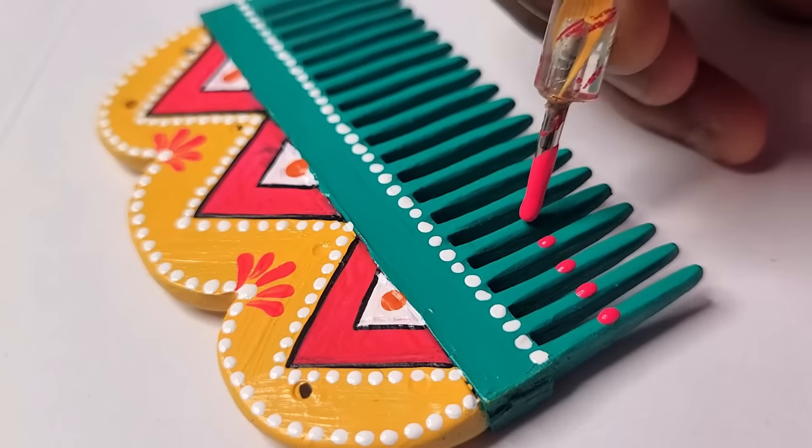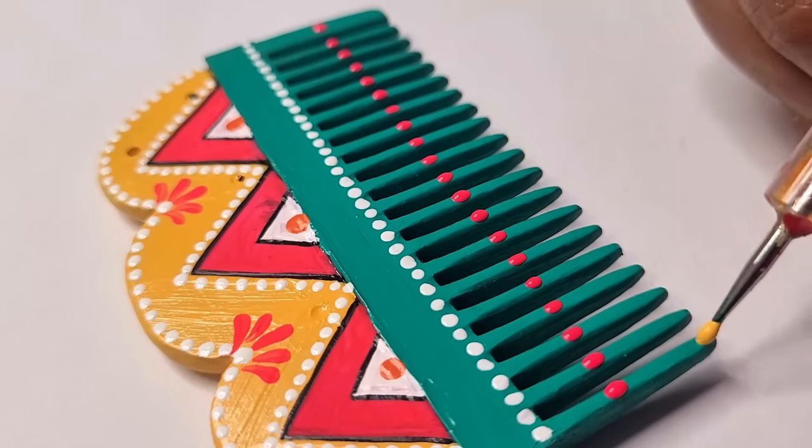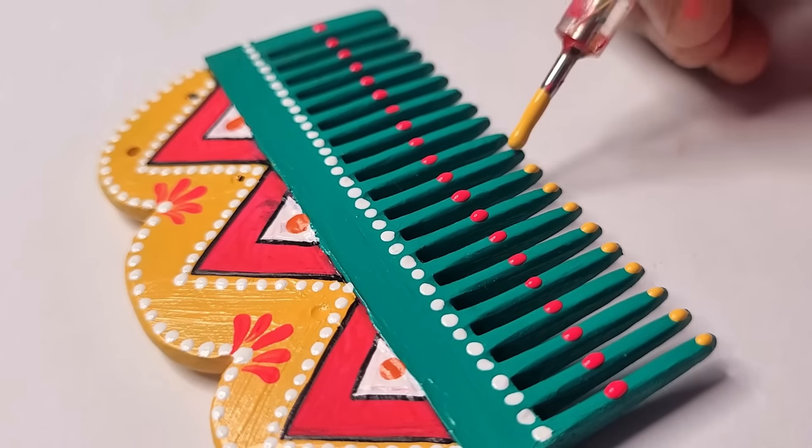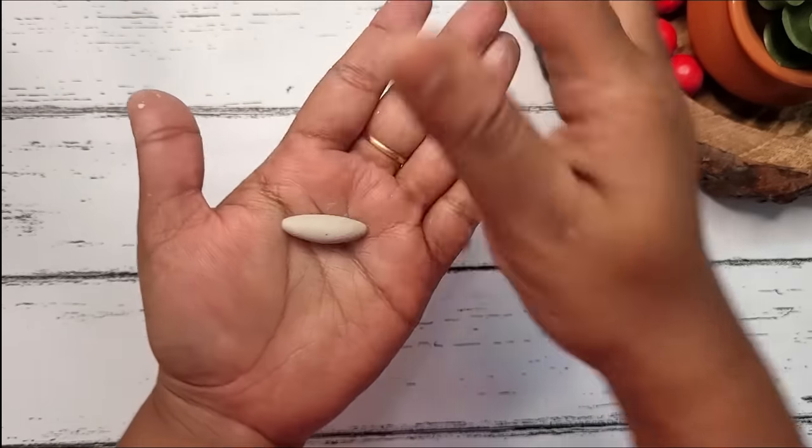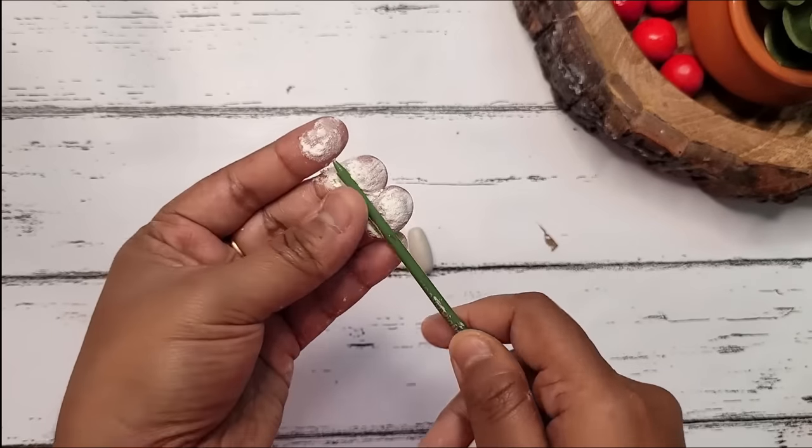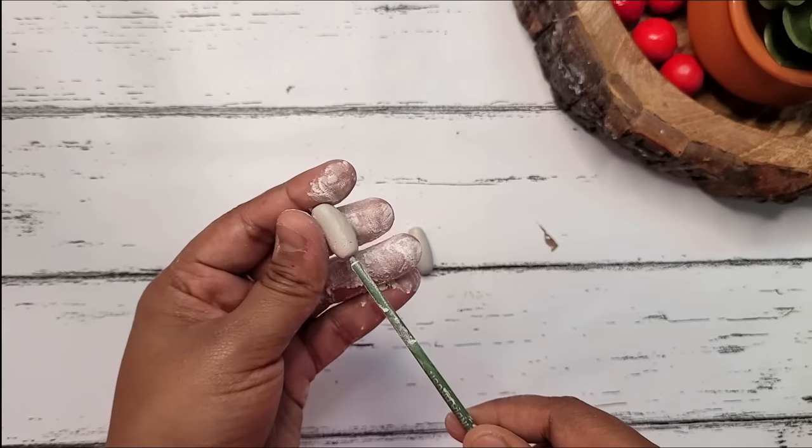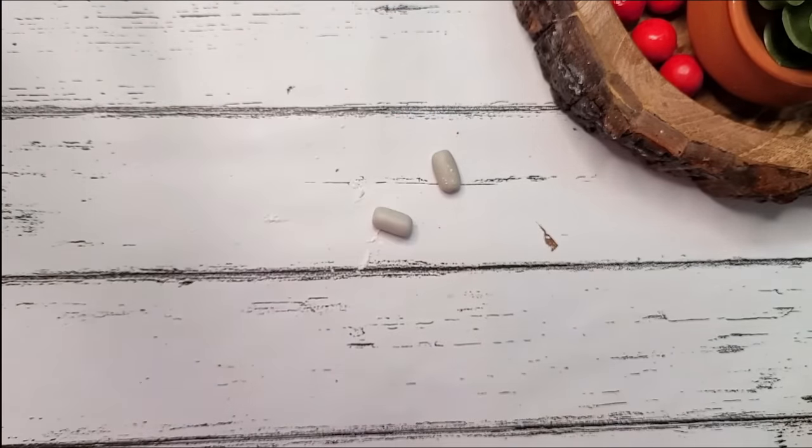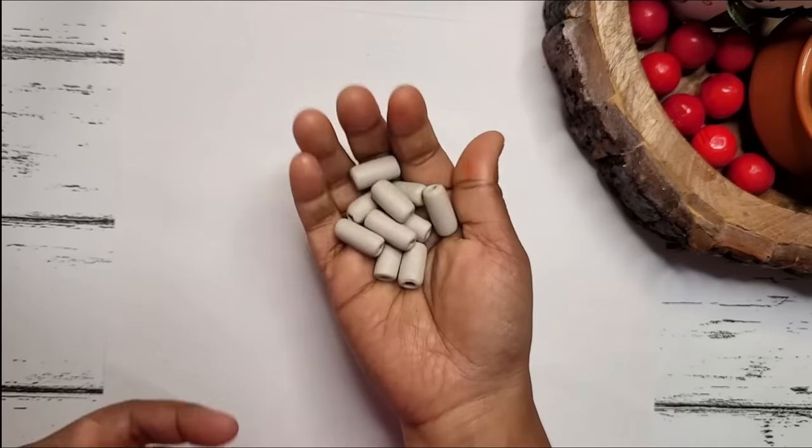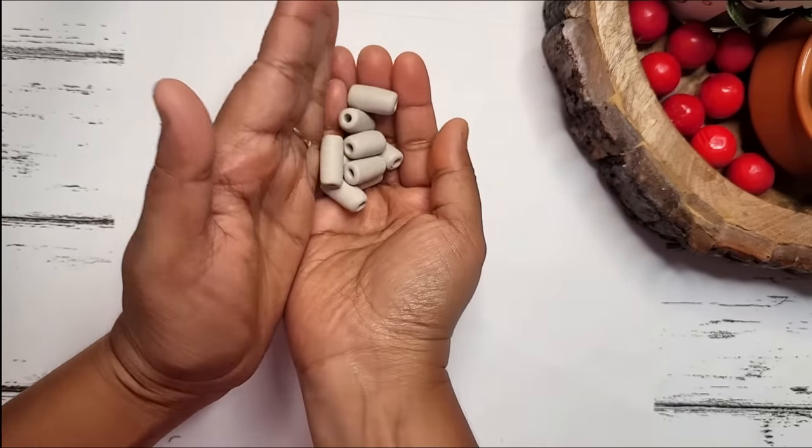Applying a lot of dots using vibrant colors to enhance the look of this comb. Taking some clay and rolling it to give cylindrical shape. Now taking a thin end brush or you can also use a toothpick, adding some talcum powder so that it doesn't stick to the clay, and making holes like this. Our clay beads are ready to use.